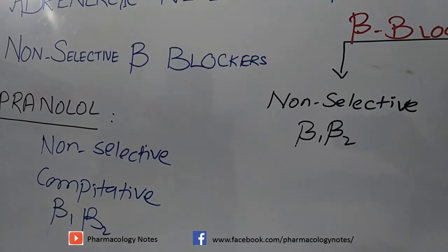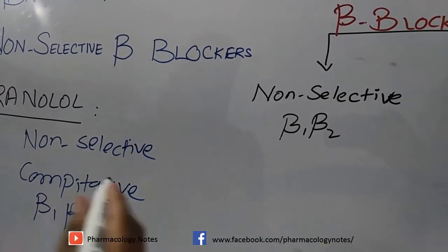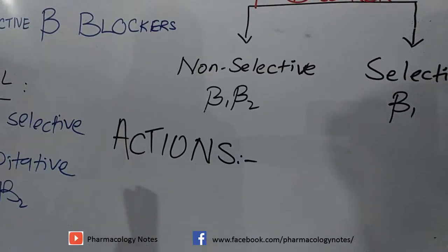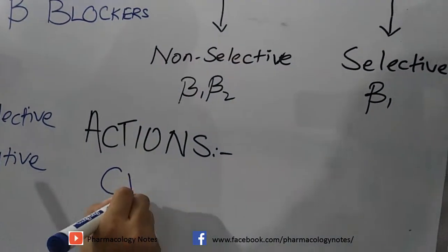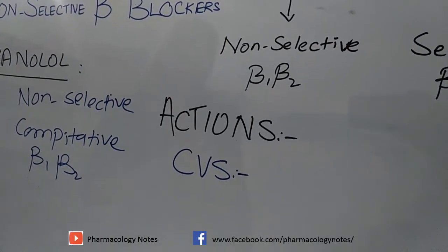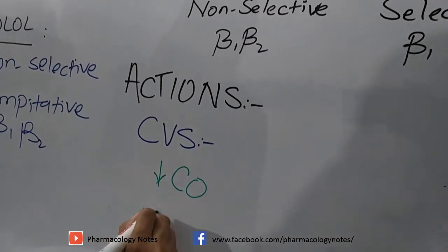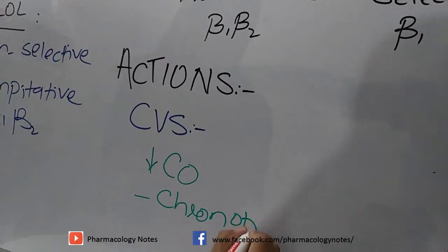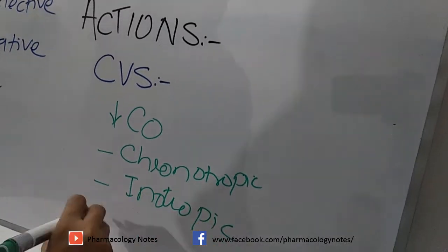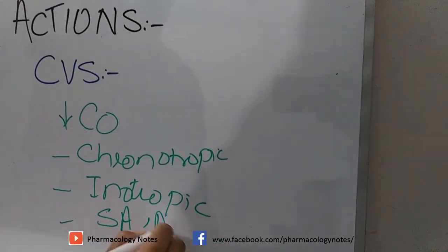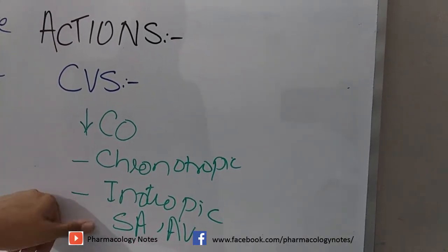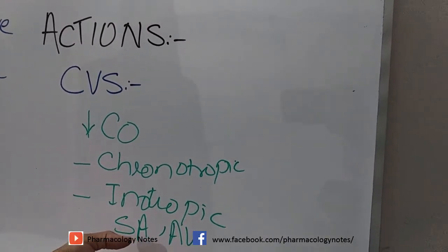Now let's examine the actions produced by propranolol, starting with the cardiovascular system. On the cardiovascular system, propranolol decreases cardiac output. It causes negative chronotropic action, negative inotropic action, and suppresses the SA node and AV node.